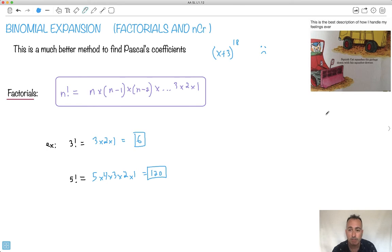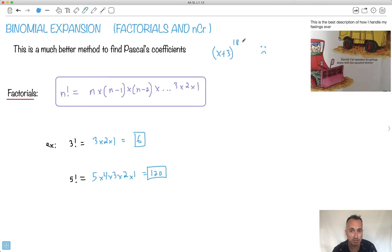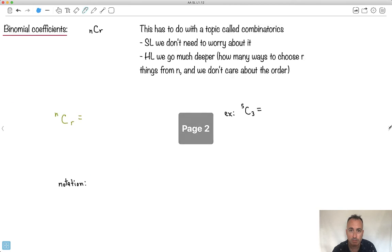Let's keep going. We're going to have something called a binomial coefficient. These are helpful in determining these coefficients instead of Pascal's triangle. The notation is called NCR. If you're SL, it suffices to just go like this. If you're HL, you're going to learn more about this - it's a topic called combinatorics. It's really about how many ways you can choose R things from N, where we don't care about the order. We also have permutations NPR, but let's not worry about that. NCR is what we need.